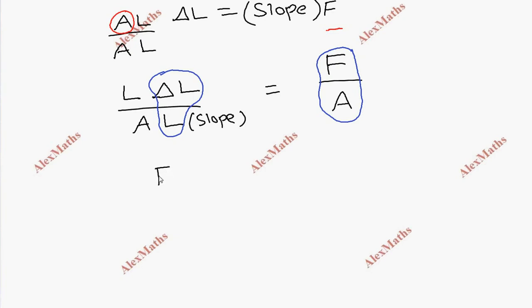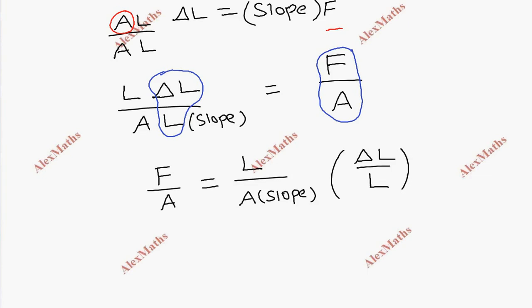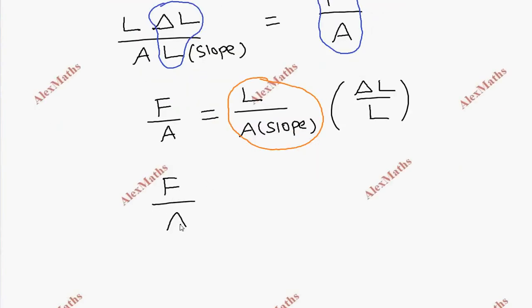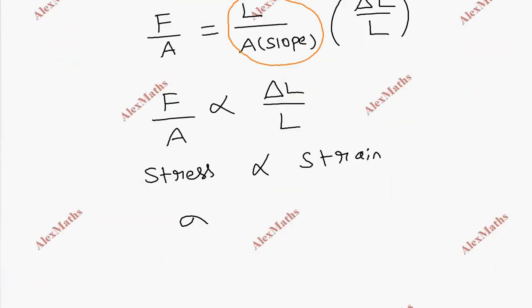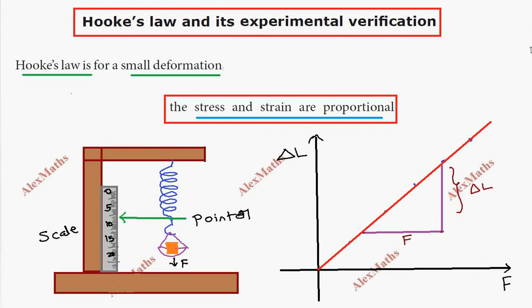So F/A = (L by A into slope) times (del L by L). This means stress is proportional to strain, with the constant being L/(A × slope). In symbolic form, sigma is proportional to epsilon. This experimentally verifies Hooke's Law — stress is proportional to strain.